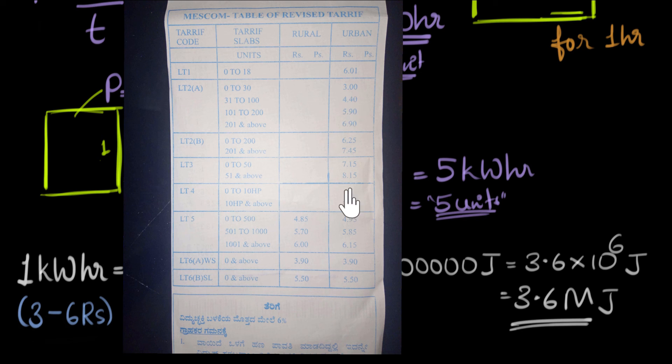And so we are paying less than 10 rupees for 3.6 million joules. So can you imagine how much we are paying for one joule? That's going to be such a small number. It's going to be some 0.001 paise or something like that. And that's why joules is so inconvenient. And that's why we prefer kilowatt hour.